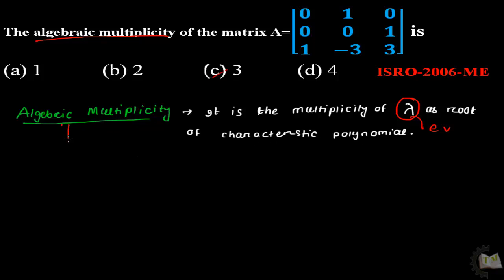This tells us that we can find the algebraic multiplicity through the eigenvalue lambda. How to get the eigenvalue? You have to write the characteristic equation, that is the determinant of A minus lambda I equal to 0.